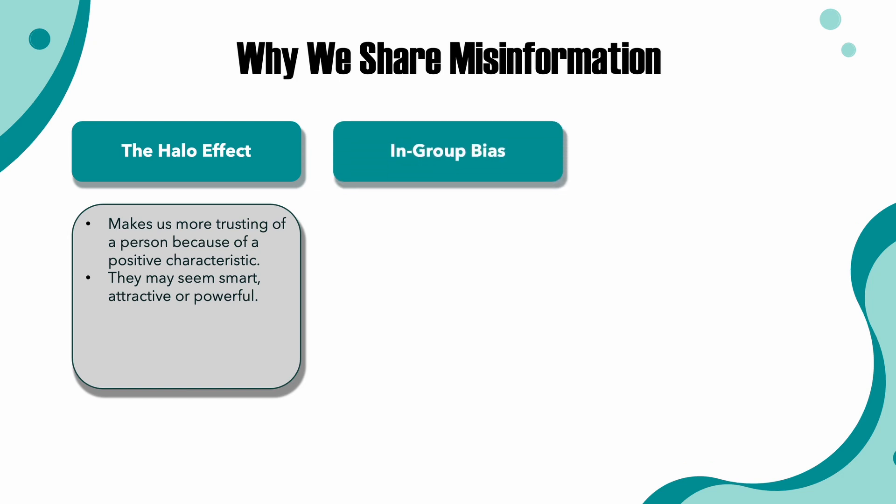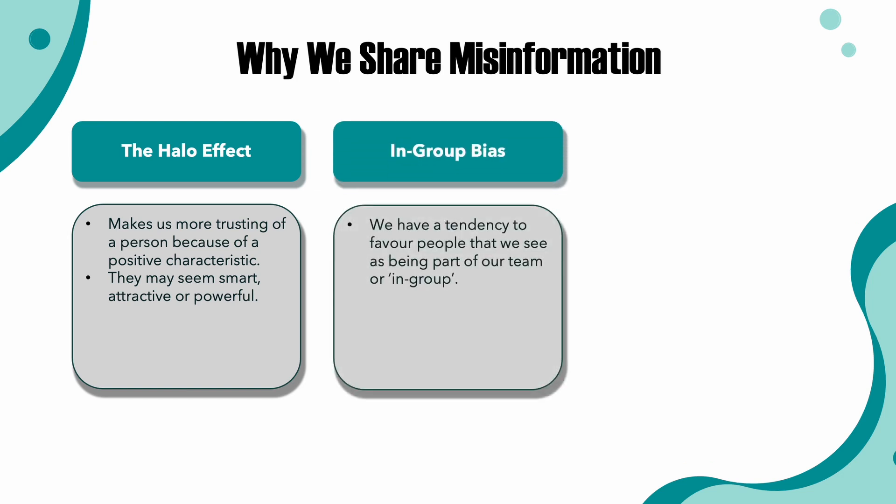Two: in-group bias. We have a tendency to favor people that we see as being part of our team or in-group. This could be because we have something in common like nationality or political beliefs. It's such a powerful bias that if you separate people into groups randomly, they start to develop an us-versus-them attitude. A recent study published in Nature showed that participants were more likely to share information that aligned with their political views, regardless of whether the information was true or not.